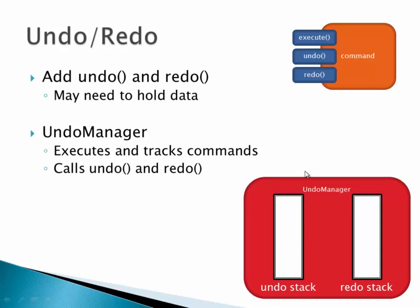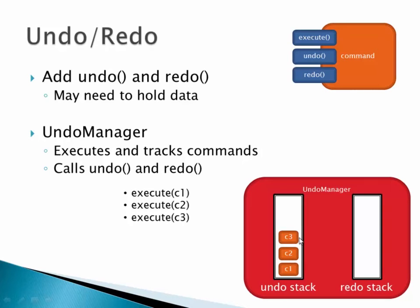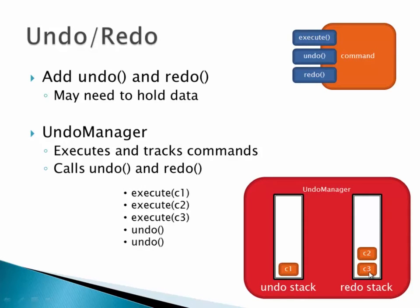The undo manager: when you call execute, it's going to push on the undo stack. Here's an example — I call execute passing in command 1 and push command 1 on the undo stack. I call execute pushing command 2 on the undo stack. Now let's say I do one more command, then I want to undo. When I call undo on the undo manager, it pops that command off and pushes it on the redo stack. Now I'm in a state where I can redo the last undone thing or undo one more time. Undo one more time — now the redo stack has C3 and C2, and the undo stack has C1.